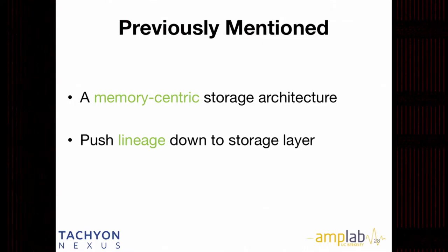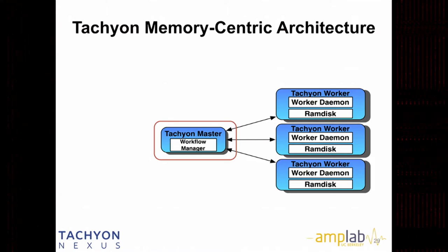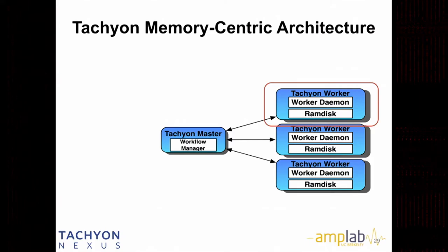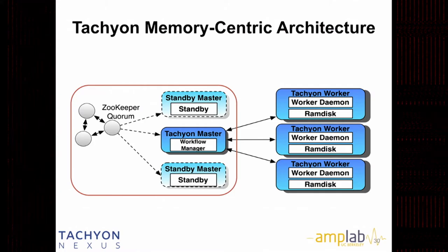To enable what we just mentioned, there are two features. One is the memory-centric architecture. The other is pushing lineage down to the storage layer. For the architecture: we have a single logical master that tracks the location of data and the status of every worker node, plus a workflow manager to manage lineage information. On every worker node we run a worker daemon managing local tiered space and reporting status to the master. Every worker node also runs a RAM disk that keeps real in-memory data. When a Tachyon client has data locality, it accesses the RAM disk directly without going through the worker daemon, to guarantee memory performance. We also have master fault tolerance using ZooKeeper for leader election.